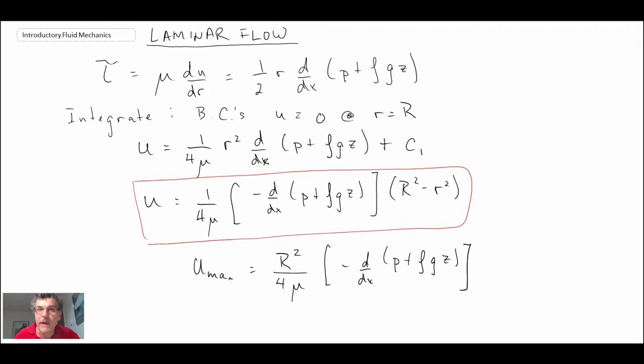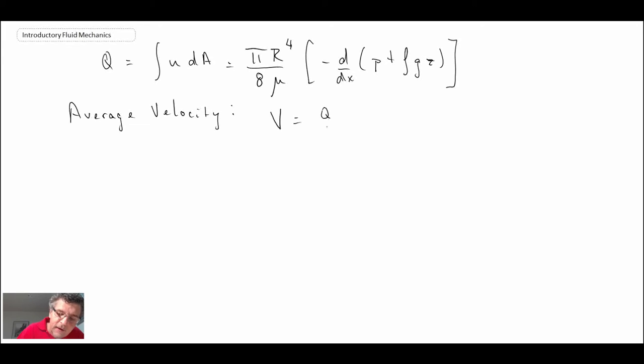Another thing that we can do, if we integrate it with respect to area, we can come up with an expression for the volumetric flow rate in the pipe. And another thing we can say is that the average velocity is the symbol V, and that is Q, the volumetric flow rate divided by the cross-sectional area.